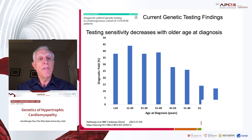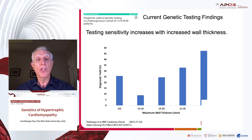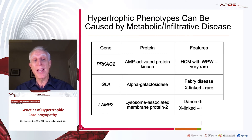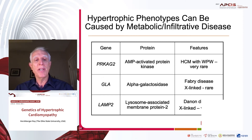Testing sensitivity decreases with older age at diagnosis, recapitulating prior studies, and also increases with wall thickness. Let me comment on metabolic or infiltrative disease — three unusual, actually rare syndromes: PRKAG2, where HCM with WPW is very rare; GLA, where alpha-galactosidase causes Fabry disease, which is X-linked and rare but occasionally seen in clinical practice; and Danon disease from LAMP2, also X-linked and very rare.